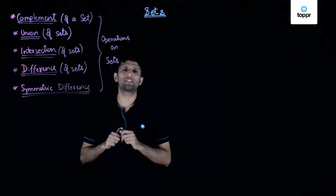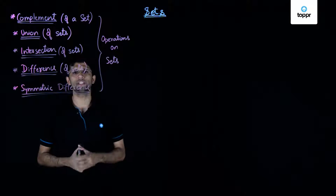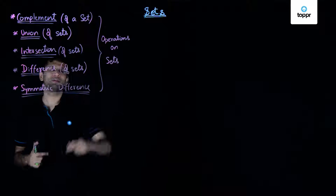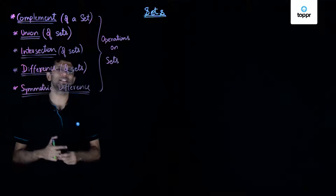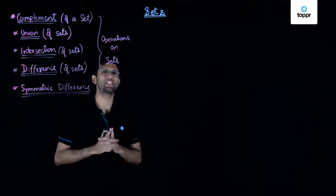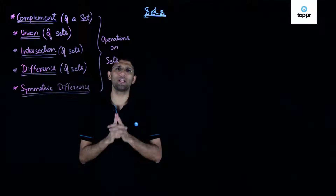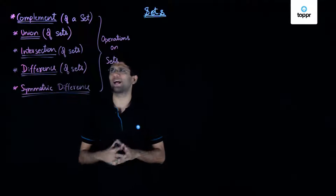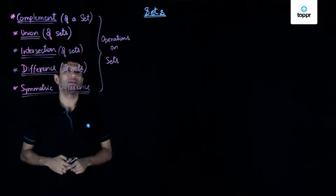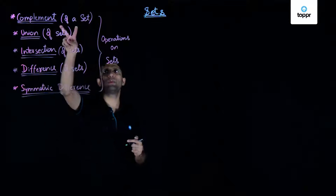Continuing our study of sets, the next topic we are going to see is known as operations on sets. Let us understand what operations can be performed on sets. The first operation we are going to see is that of complement of a set, and so we will now define what complement of a set is.